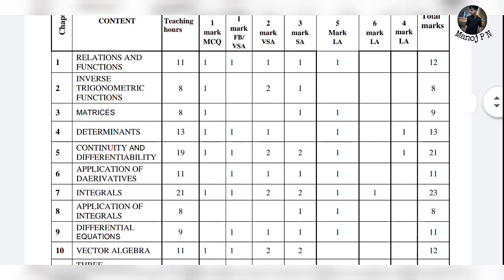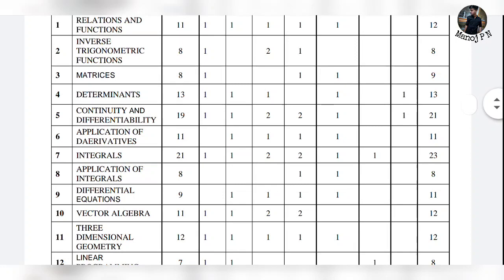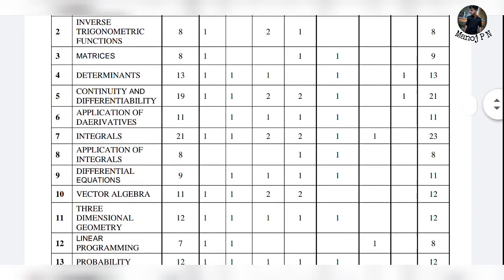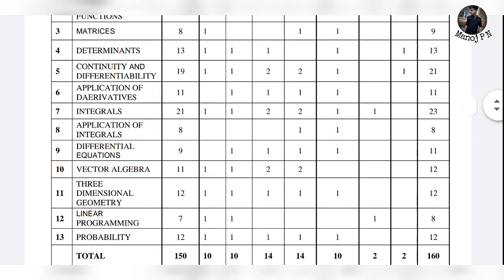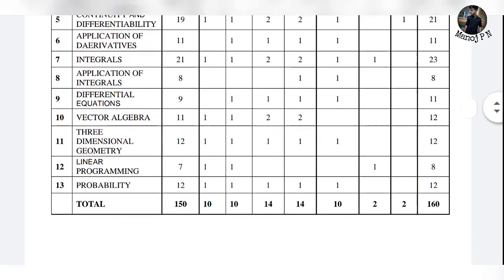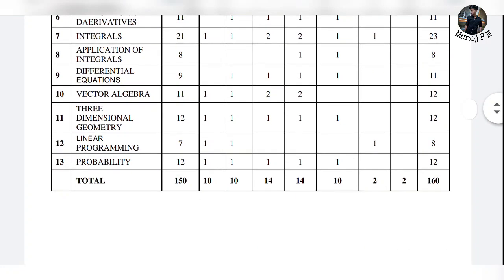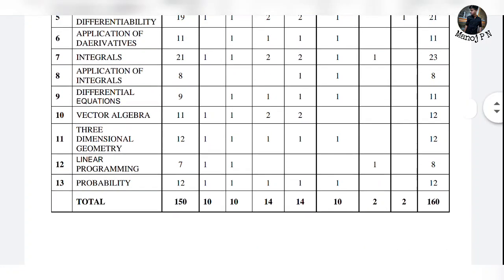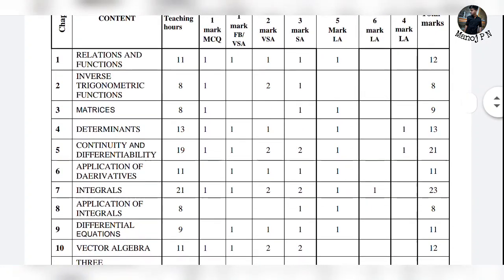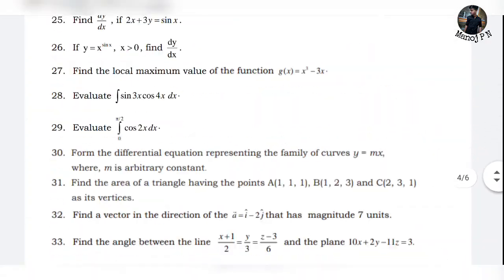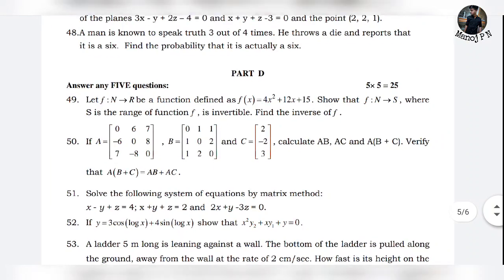You are taking Part D. You have the relation function, matrix, determinants, continuity and differentiability, application of derivatives, integrals, application of integrals, and then differential equations. That's why you have three dimensional geometry and then probability question. You have to ask all questions.